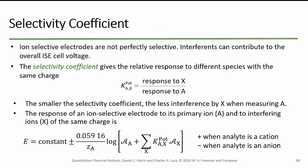We need to know about the selectivity coefficient. If I want to measure something, I want to make sure I am only measuring the thing I'm interested in — I do not want to measure something else by accident. Ion selective electrodes are not perfectly selective. Interference can contribute to the overall ion selective electrode cell voltage. The selectivity coefficient gives the relative response of different species with the same charge. The smaller the selectivity coefficient, the less interference by X when measuring A — so X is bad, A is good.